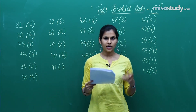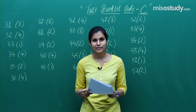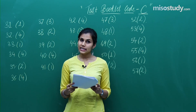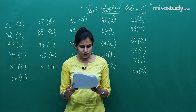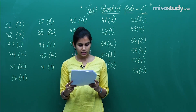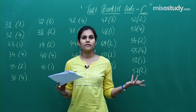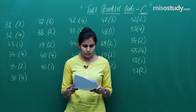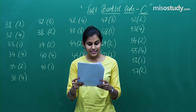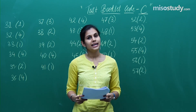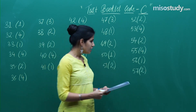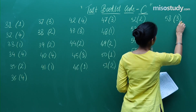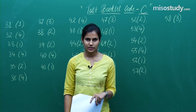Question 58 is again from conic sections — you can see how this topic is repeatedly asked. From 11th standard: a tangent at the point (1, 7) to the curve touches the circle, then find the value of c. Direct usage of concept; the value of c is 95, which is option number 3. So question 58, third option is correct.